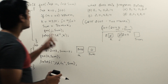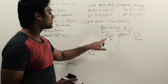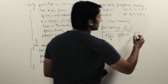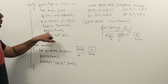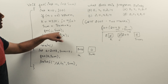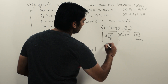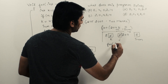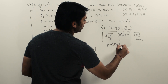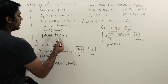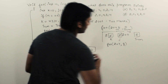Sum is now 8. Then we call foo again with j and sum — that is, foo(204, 8). So the value of j is 204 and the value of sum is 8.